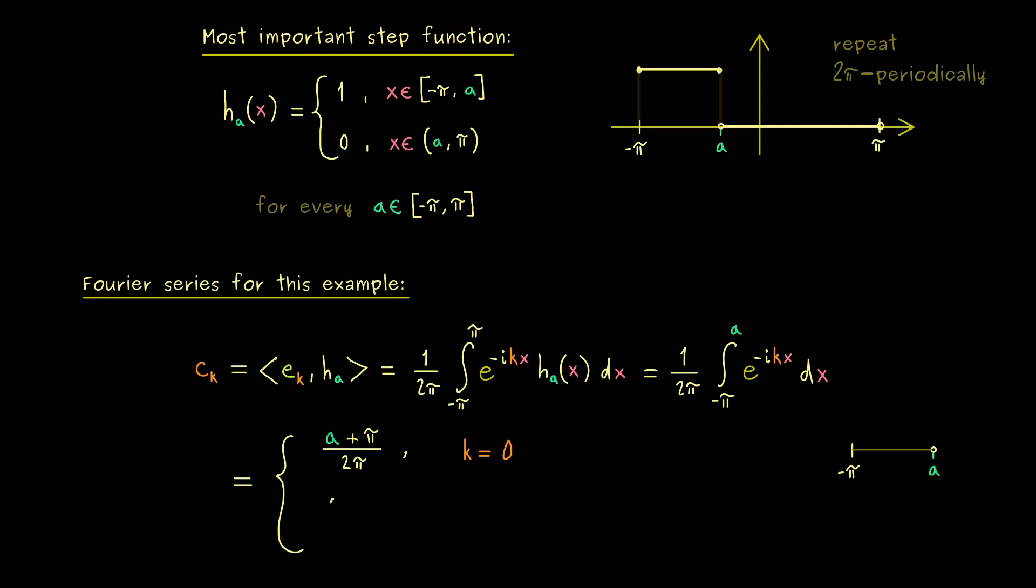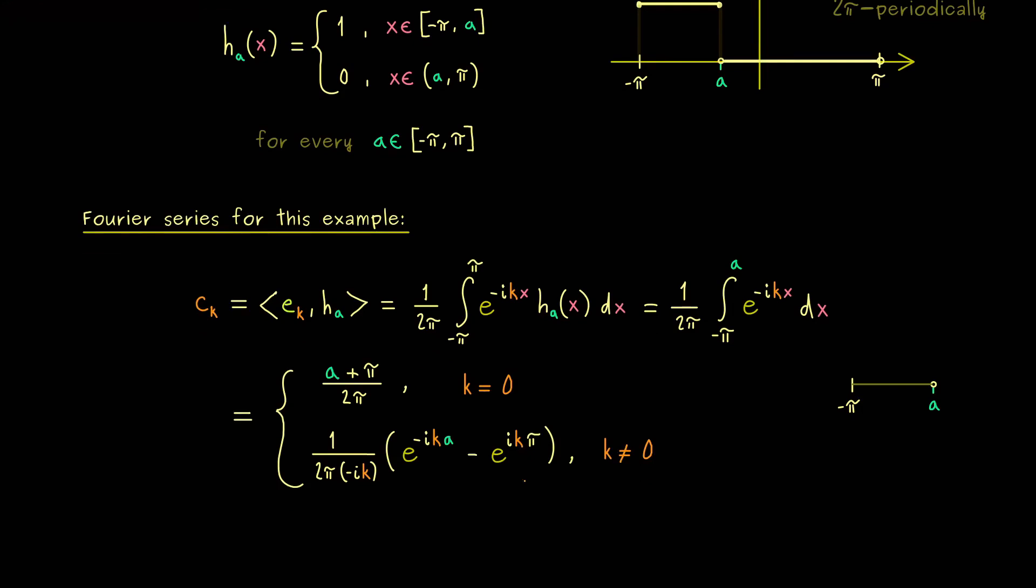And then for the second case, k is not equal to 0, we actually have to use our antiderivative of the exponential function. Which is again the exponential function, just with the constant minus ik in front. And then, as usual, we just put in the limits of the integral. So we have e to the power minus ik a minus e to the power ik pi. And that's it. This is our second case. So you see, calculating the Fourier coefficients in this case is not complicated at all.